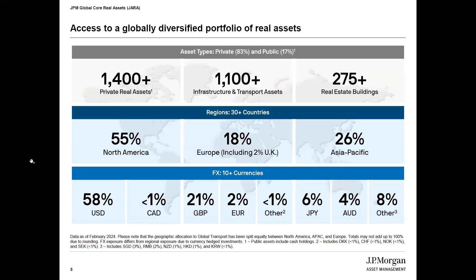From a geographic perspective, when I say global, we really mean it: 55% North America, 18% Europe of which only 2% is in the UK, and just under 30% in the developed markets primarily of Asia Pacific. One of the big drivers of risk and return in real assets is the local market in which these assets operate. Diversifying that country-by-country exposure should allow for better outcomes over time.